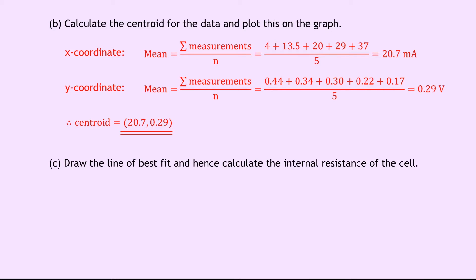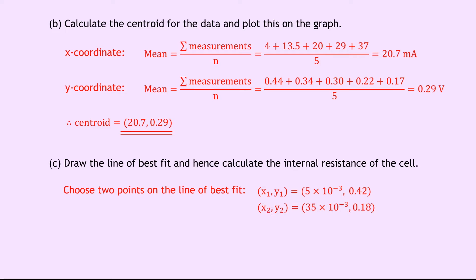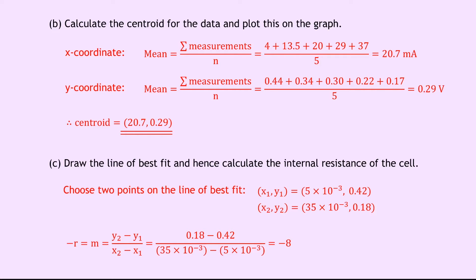Part C says draw the line of best fit and hence calculate the internal resistance of the cell. To find the internal resistance, when we've got a graph of voltage on the y-axis against current on the x-axis, the internal resistance is given by the negative of the gradient of the line of best fit. To calculate it, we choose two points on the line of best fit: I've chosen (5×10⁻³, 0.42) and (35×10⁻³, 0.18). Then: −R = m = (y₂ − y₁)/(x₂ − x₁) = (0.18 − 0.42)/(35×10⁻³ − 5×10⁻³) = −8. Since −R = −8, this gives us an internal resistance R of 8 ohms.